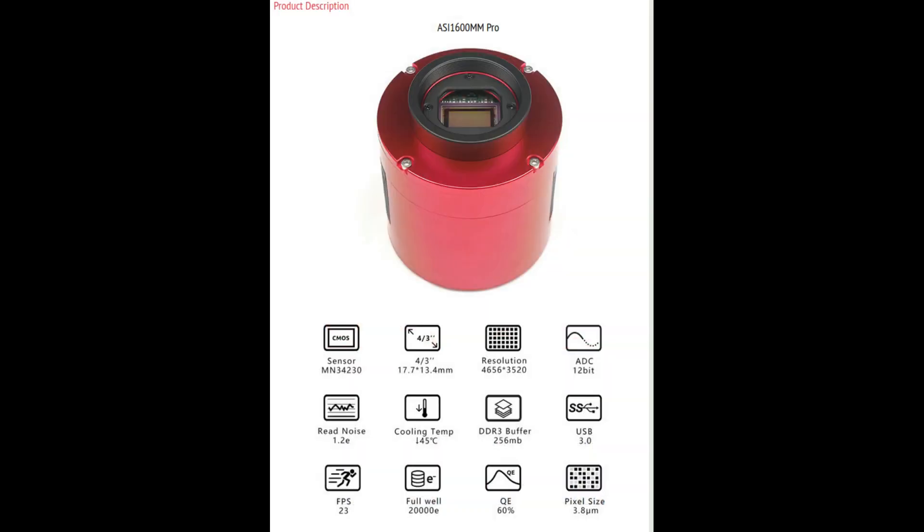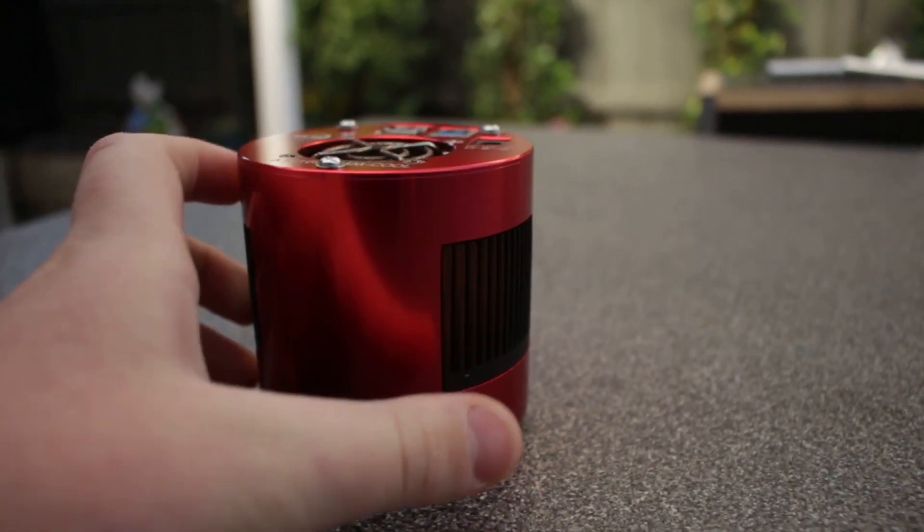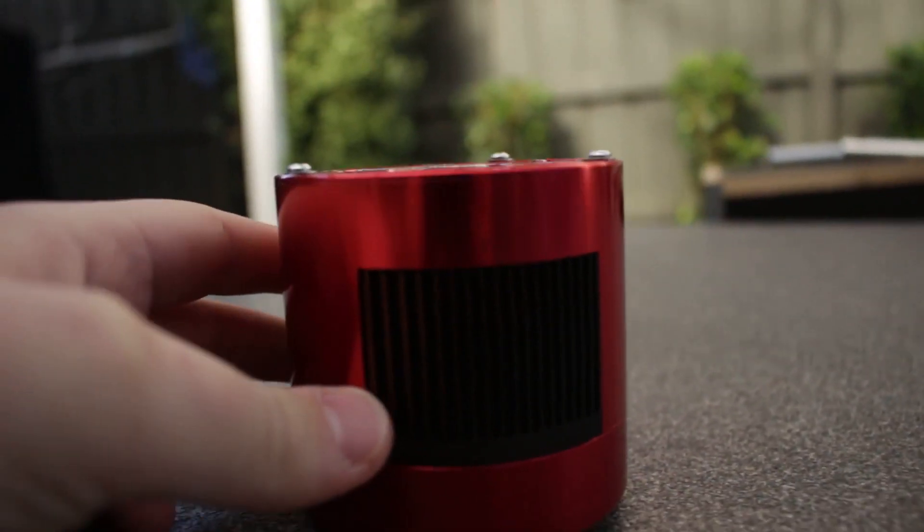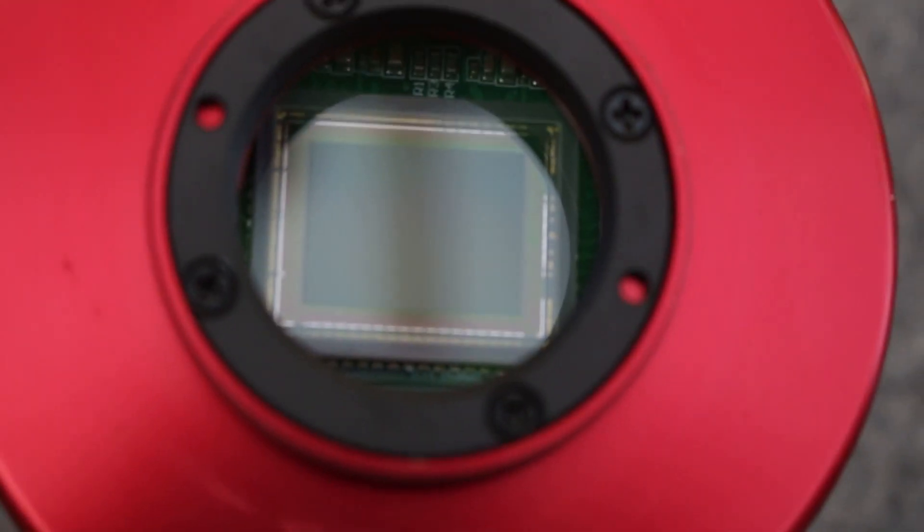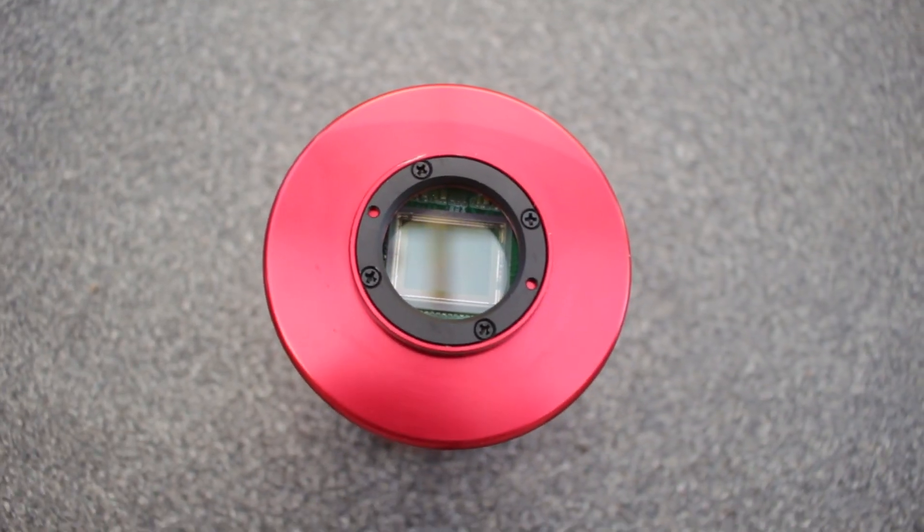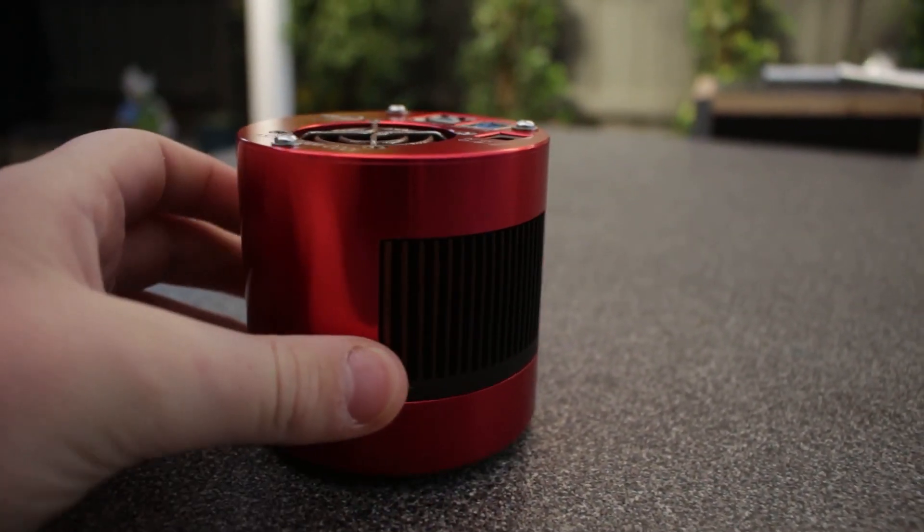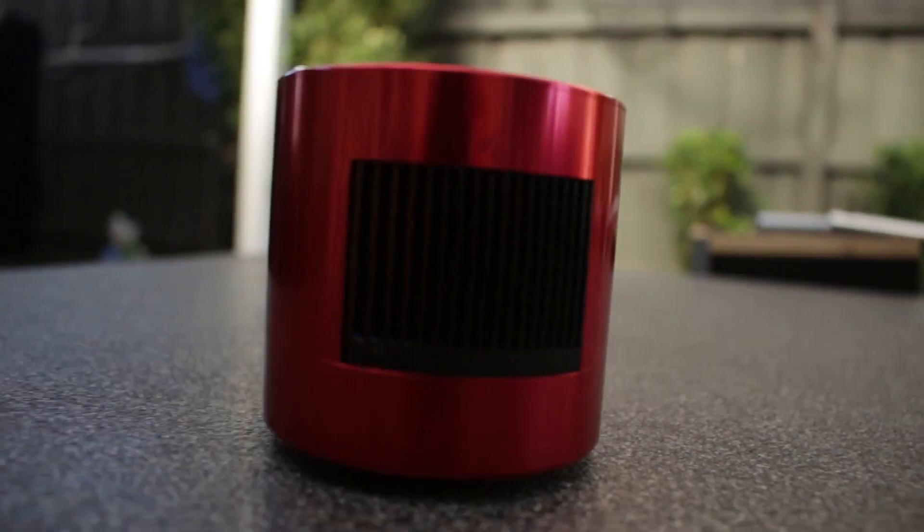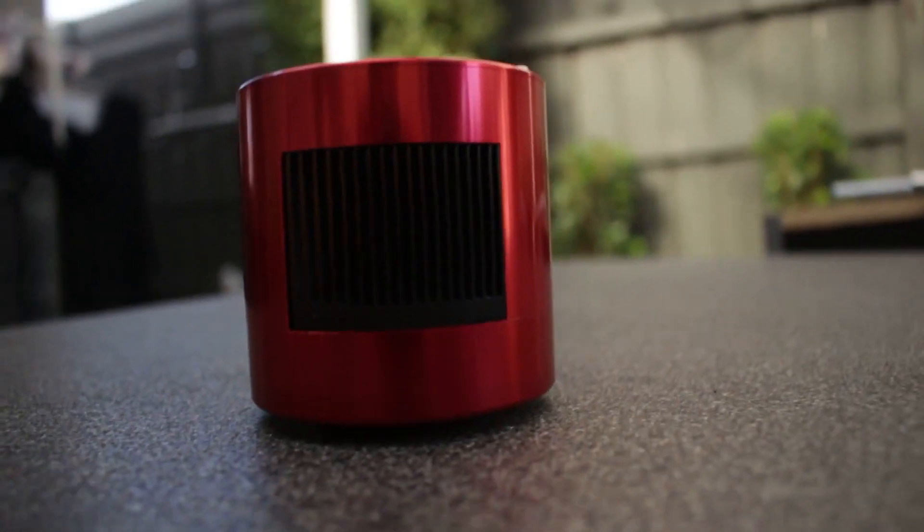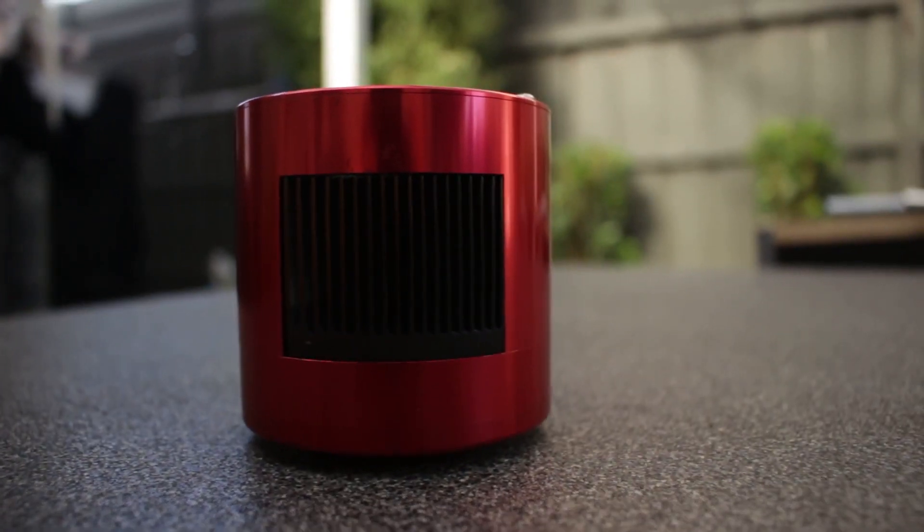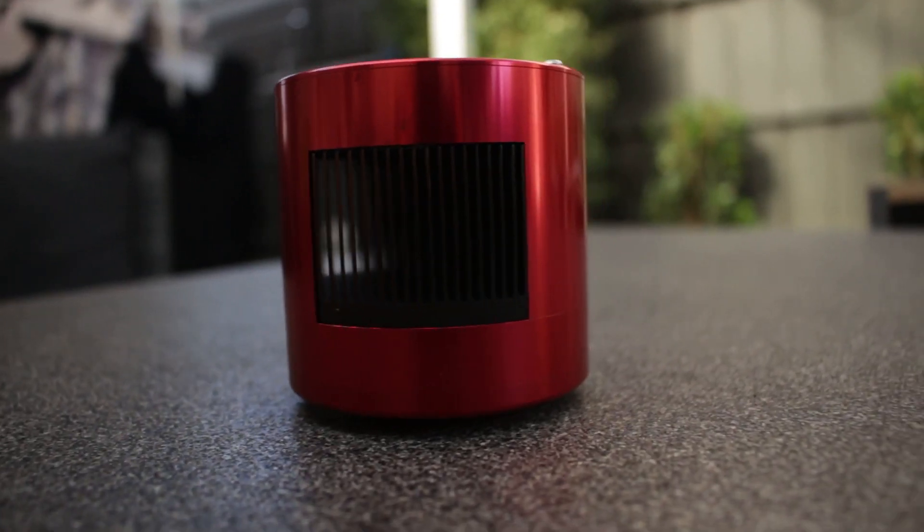The specs on this camera were frankly unbelievable for the price. Around $1,000 for the camera, which used the incredible Panasonic MN34-230, with a whopping 60% quantum efficiency. Quantum efficiency is the amount of photons getting turned into electrons. CCDs were far less sensitive, but the ZWO converted 60% of those photons into electrons.